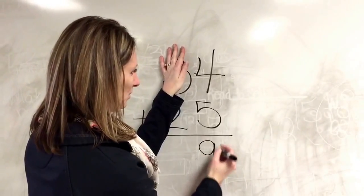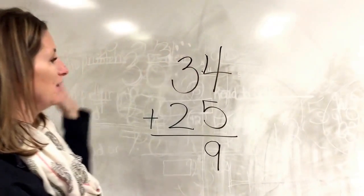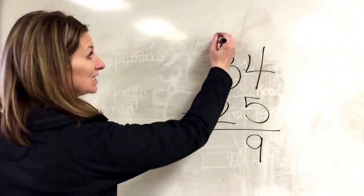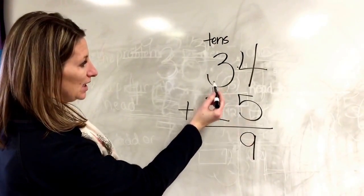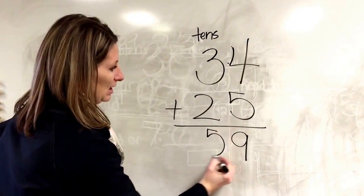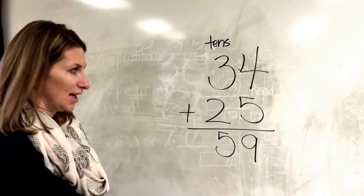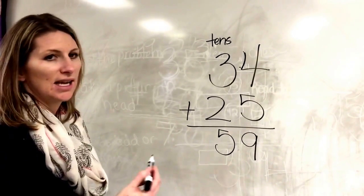nine. So I'm gonna put it right below in the same ones column. Then I'm gonna move over to my tens column, right over here. So I have three, four, five. My answer is 59. I added the ones first, and then the tens.